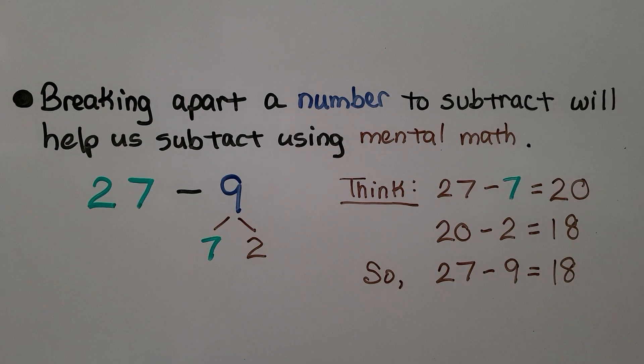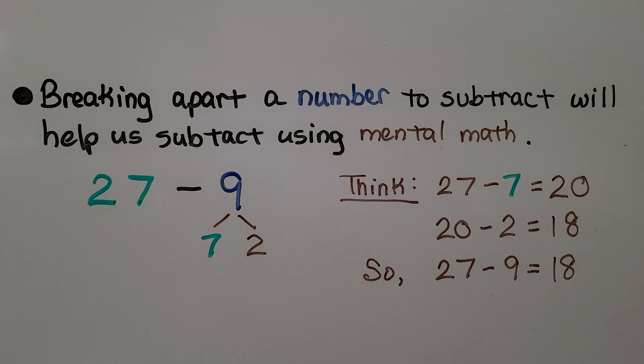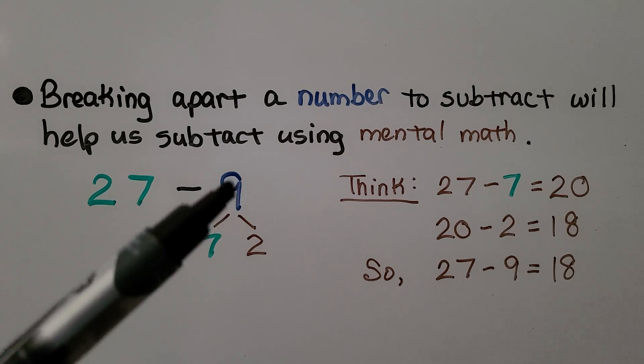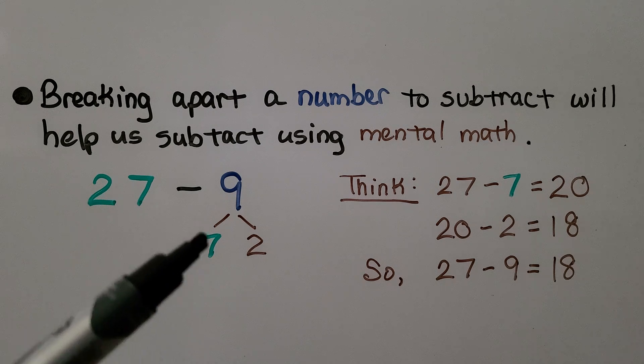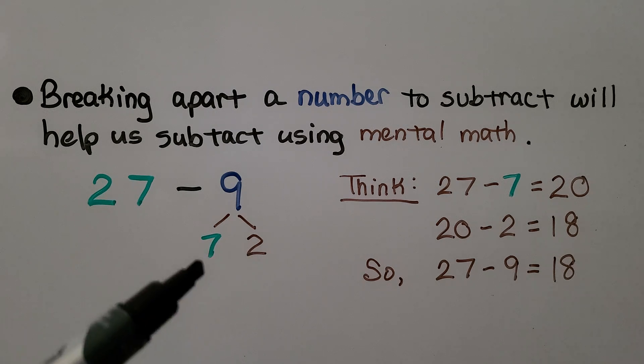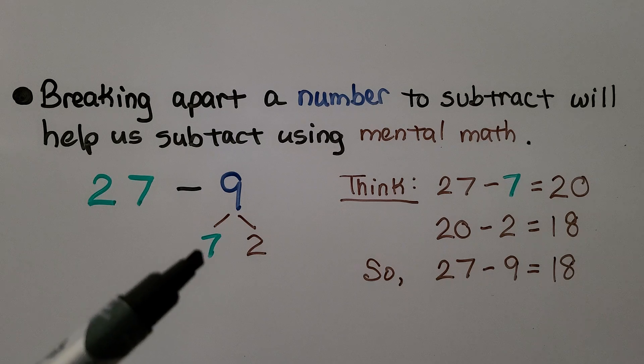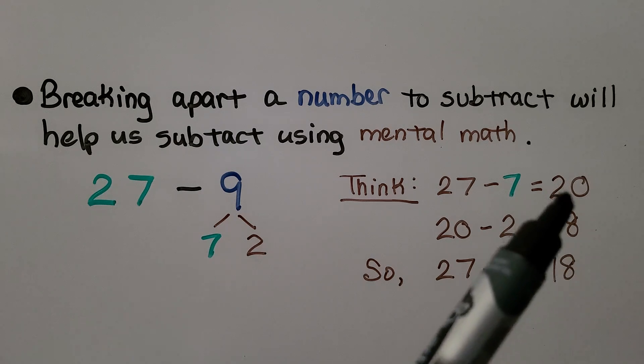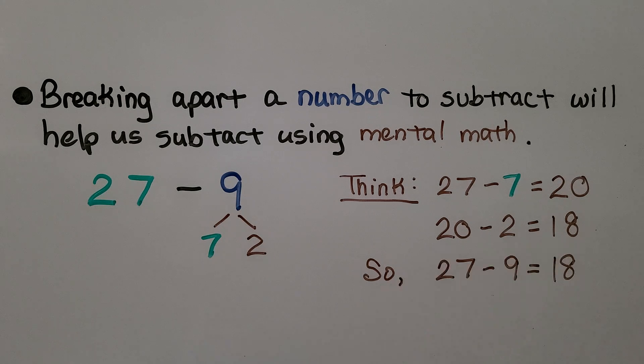Breaking apart a number to subtract will help us subtract using mental math. We have 27 minus 9. We have a 7 here, so one of the addends is going to be 7. So we have 7 and 2. We think 27 minus 7 is 20. Now we're at a tens number. Now we do 20 minus this 2. That's equal to 18.